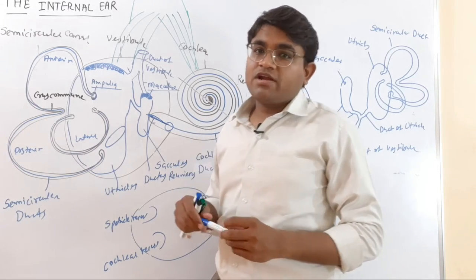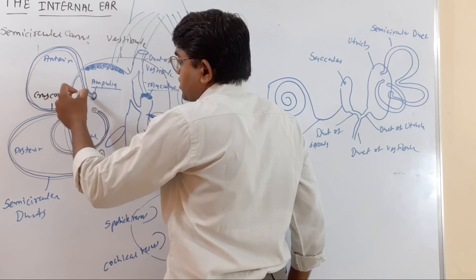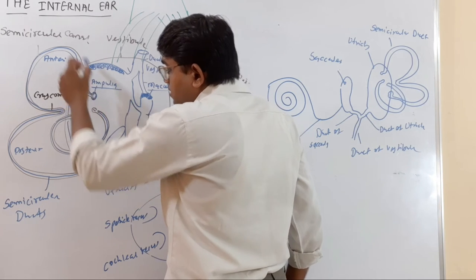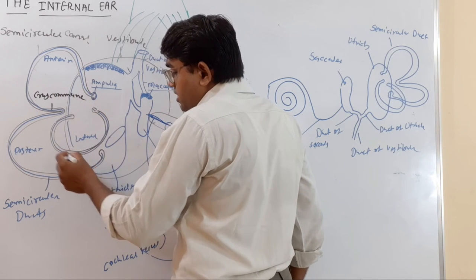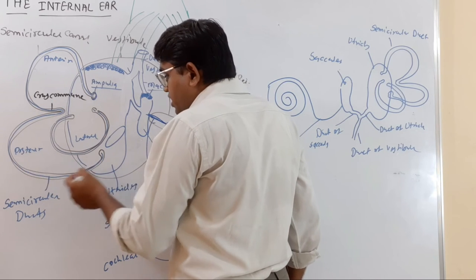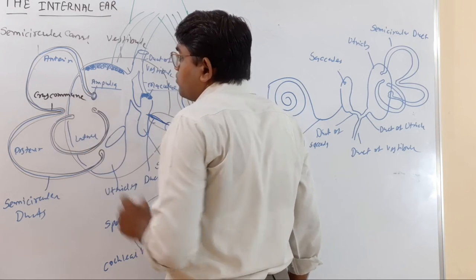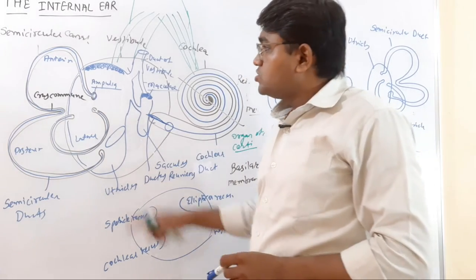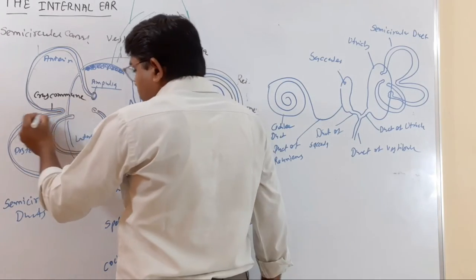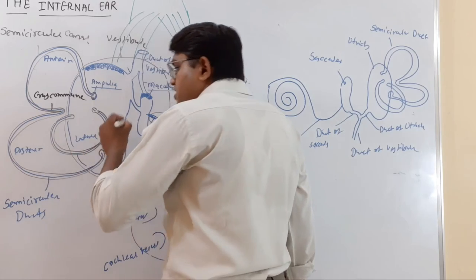There are three ampullae: the anterior semicircular canal has its ampulla on the anterior side, the posterior semicircular canal has its ampulla on the posterior wall, and the lateral semicircular canal's ampulla is situated near the ampulla of the anterior semicircular canal. The anterior and posterior semicircular canals are in a vertical plane, while the lateral semicircular canal is in a horizontal plane.